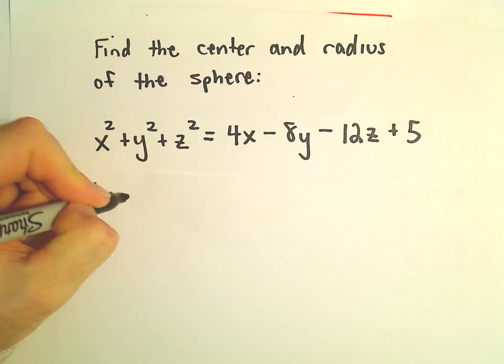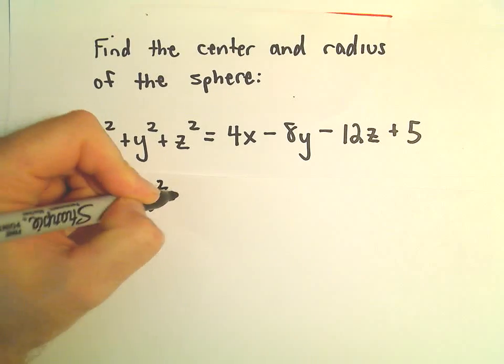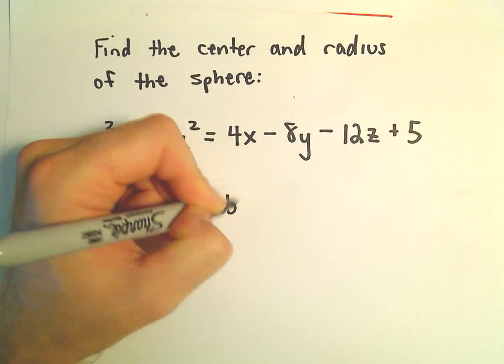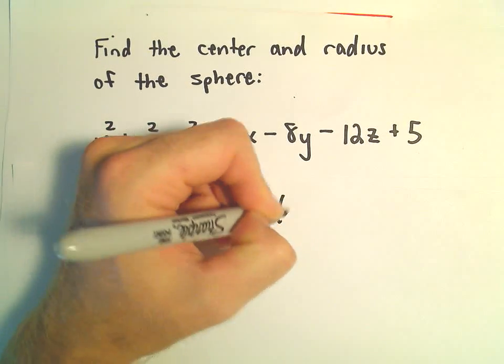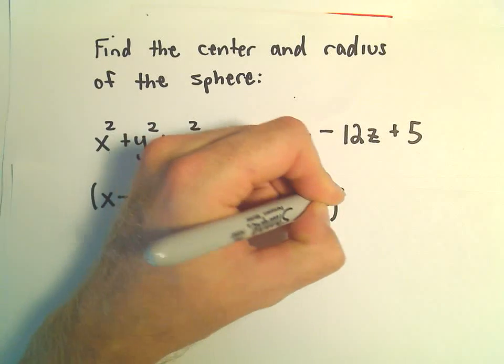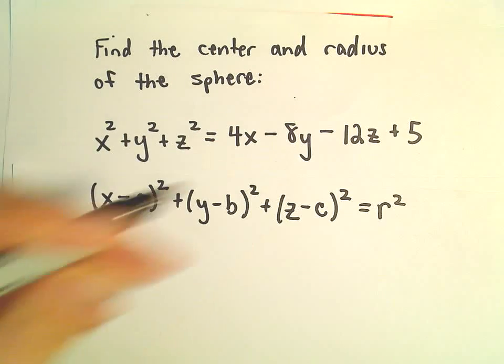So we're going to put it in the form x minus a squared plus y minus b squared plus z minus c squared equals r squared.